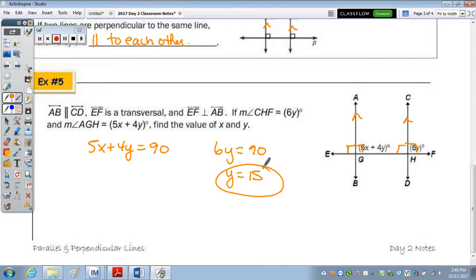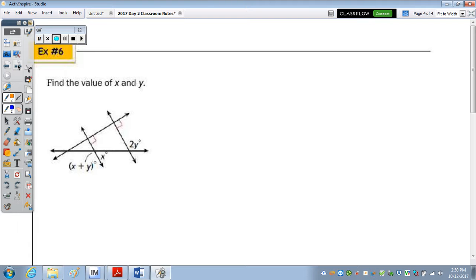Plug in the 15 for Y. We have 5X plus, and we know the product of 60. So we would subtract the 60, and 5X equals 30. Divide by 5, and X is 6. So how do we solve the next one? And then we'll finish with the construction.